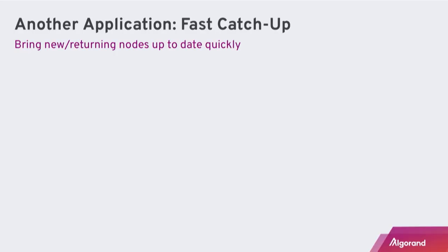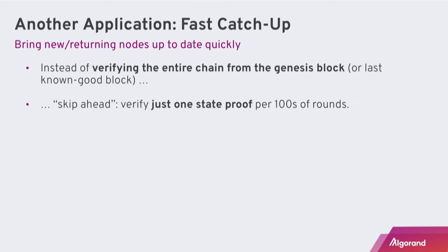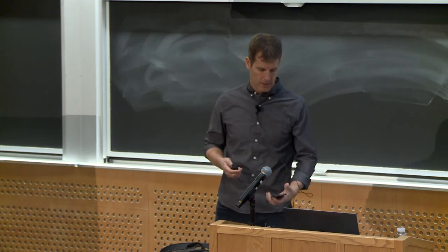Another application is enabling fast catch-up on Algorand itself — allowing new, returning, or lightweight nodes to catch up to date more quickly. Instead of verifying the entire chain from the genesis block or from whenever you last went offline, you can skip ahead with big leaps by verifying one state proof for every few hundred rounds. Even if you are online all the time, you could still check these state proofs to get a post-quantum security assurance.